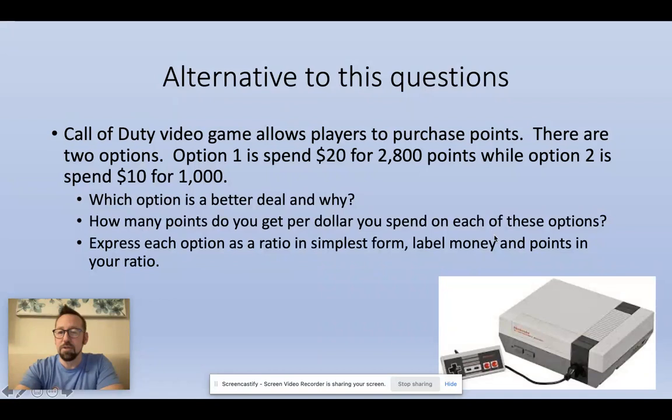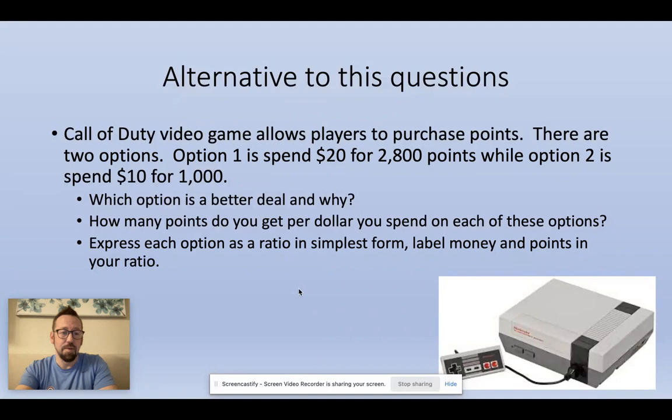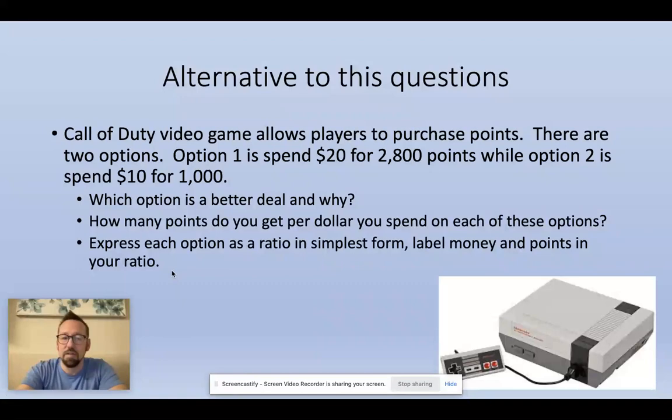I have a picture of a Nintendo here — that's what I played back in the day, Mike Tyson's Punch-Out and things like that. But this is real life stuff. These are real options and kids would be engaged. They can also be thinking about: if I spend this much money on this game, I should care about which one is a better deal — am I going to get points one time or multiple times? They can express these as ratios in simplest form. They're going to care about labeling the money and the points as a ratio because this is relevant to their life.